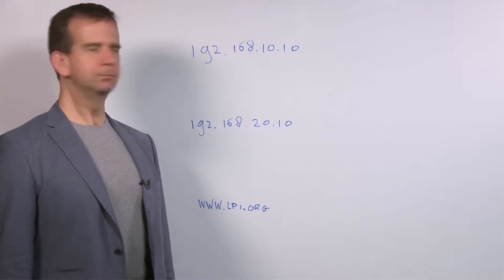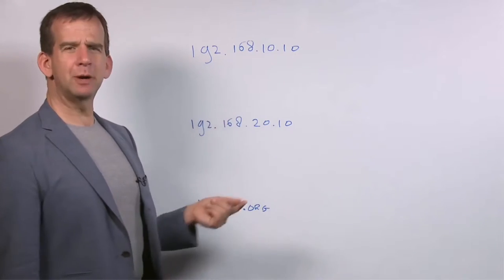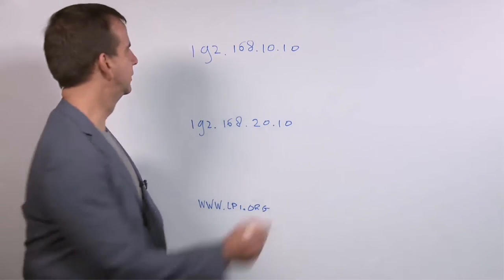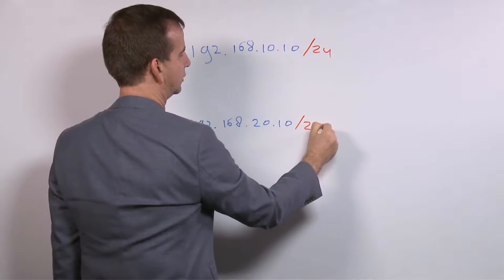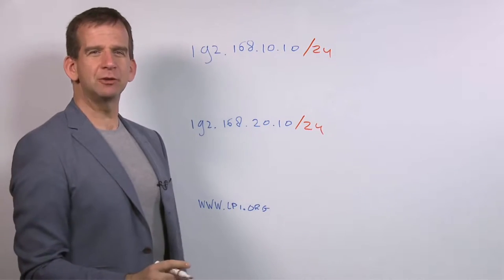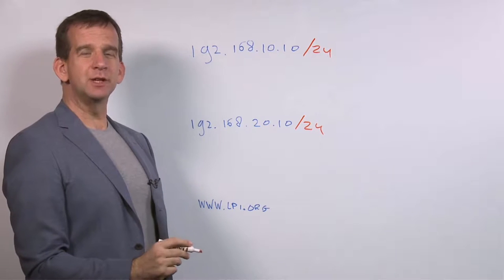Now let's talk about routing. We've previously talked about these two different IP addresses, and I've mentioned that if we are using /24 as a subnet mask, then they are on different networks.